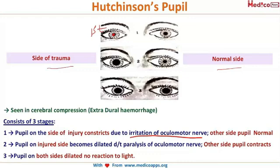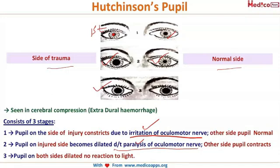In stage two, the pupil on the injured side becomes dilated due to paralysis of the oculomotor nerve, while the other side's pupil constricts. In stage three, both pupils are dilated — this gives a very grim prognosis. In summary: stage one — injured side constricts; stage two — injured side dilates, normal side constricts; stage three — both pupils dilated.